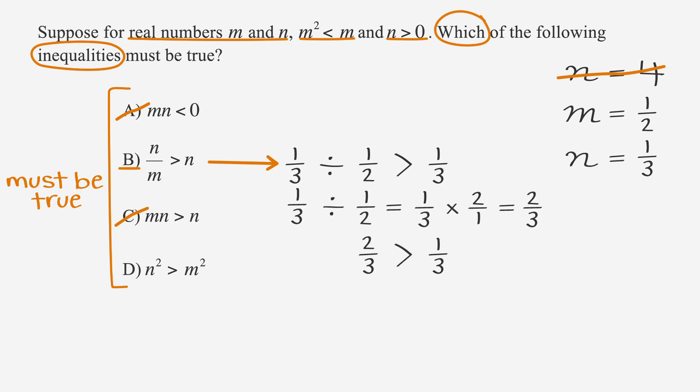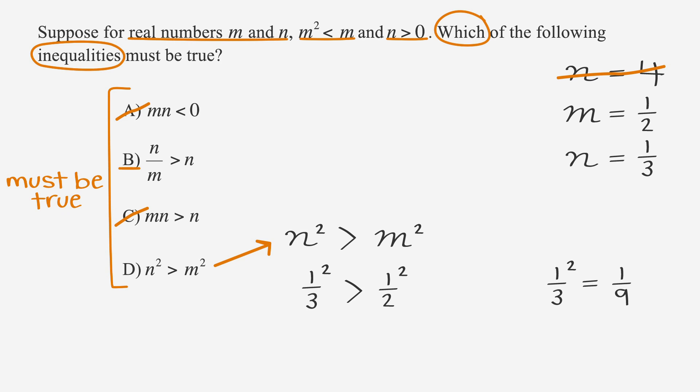So we have two thirds is greater than one third, which is true. So answer choice B is still in the game. Now let's retest answer choice D. We have n² is greater than m², or one third squared is greater than one half squared. One third squared equals one ninth, and one half squared equals one fourth. One ninth is not greater than one fourth, so answer choice D is not always true. This means that answer choice B is correct.